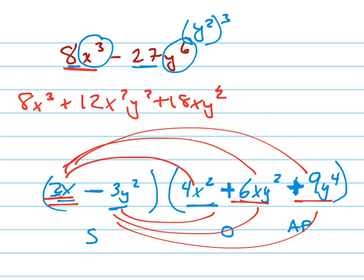Nope, y to the 4th, right? That times that is minus 12x squared y squared. Look at that. Those go away. That times that is minus 18xy to the 4th, boom, boom.